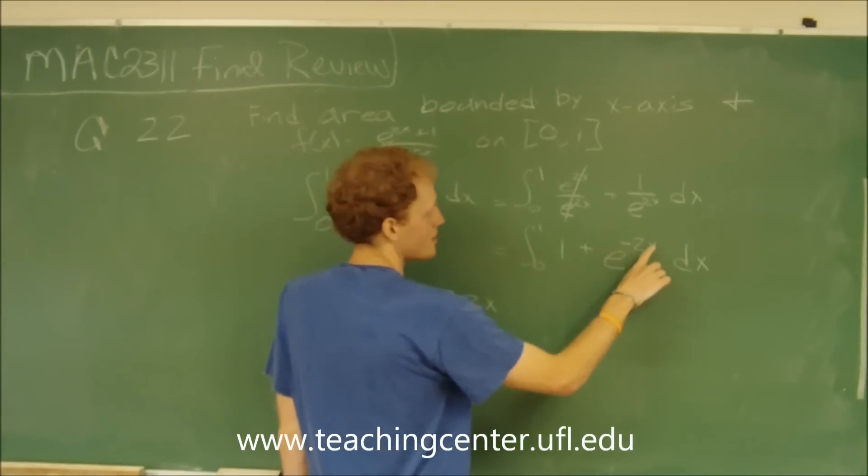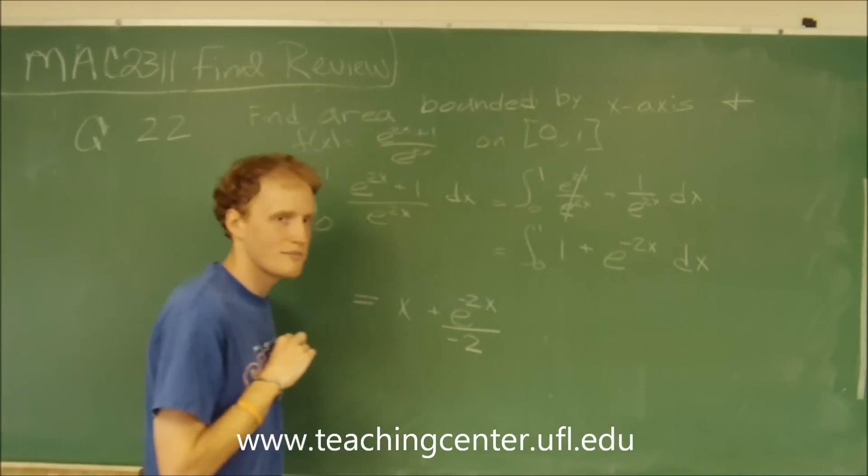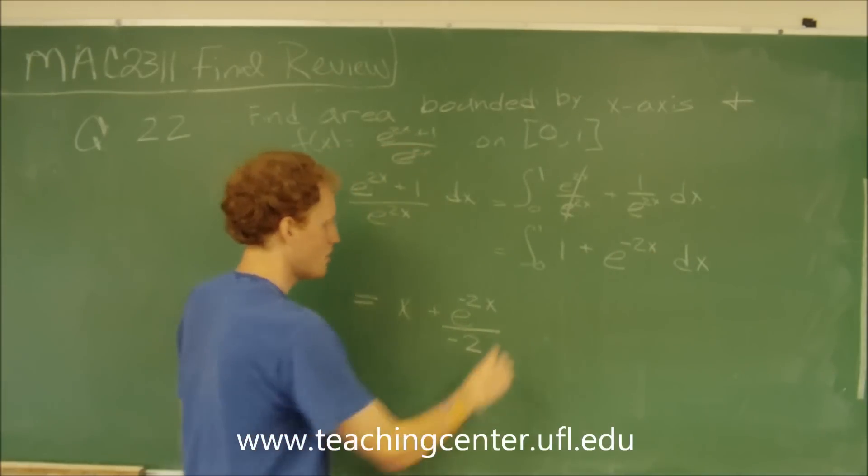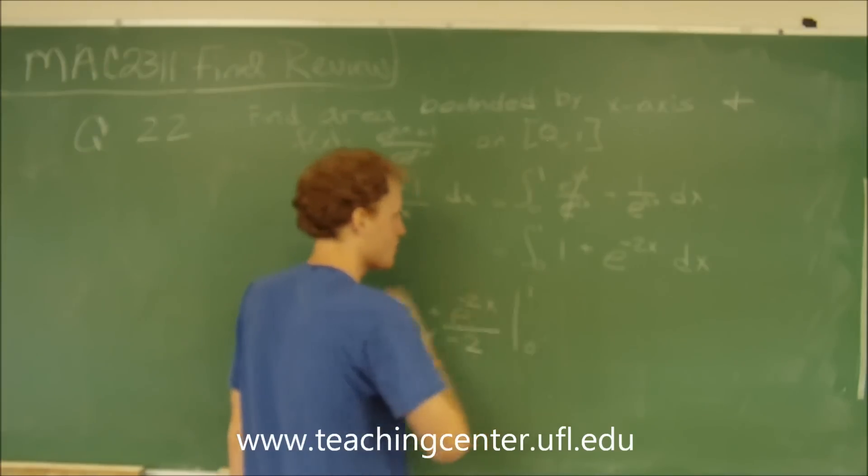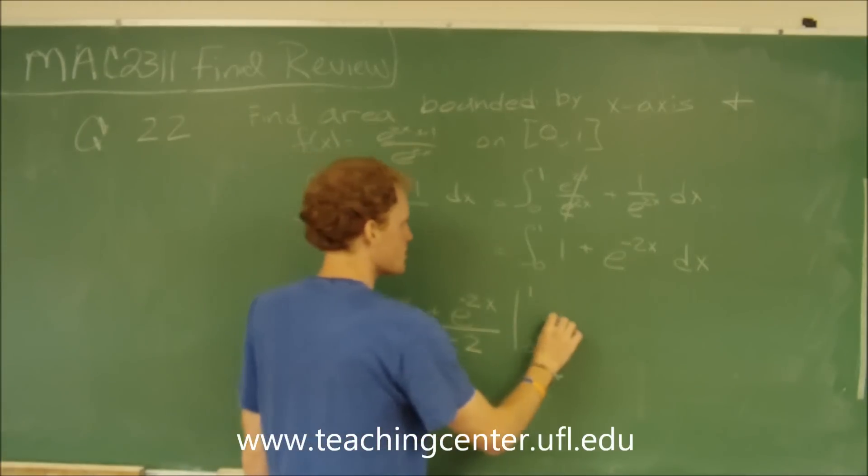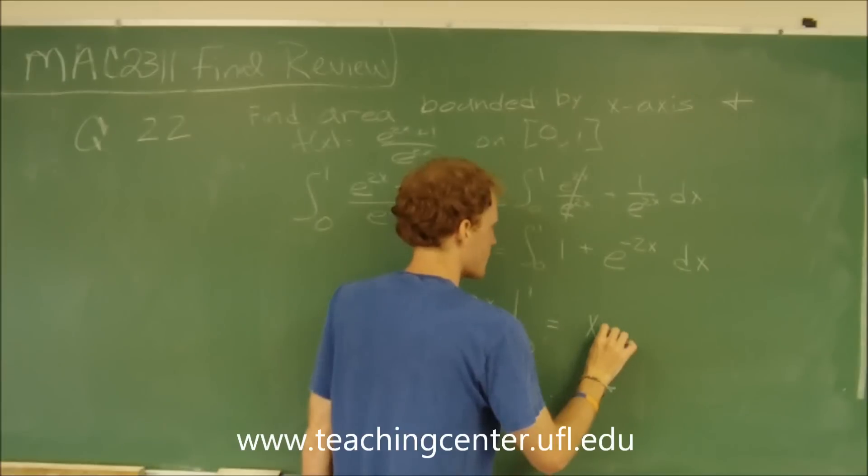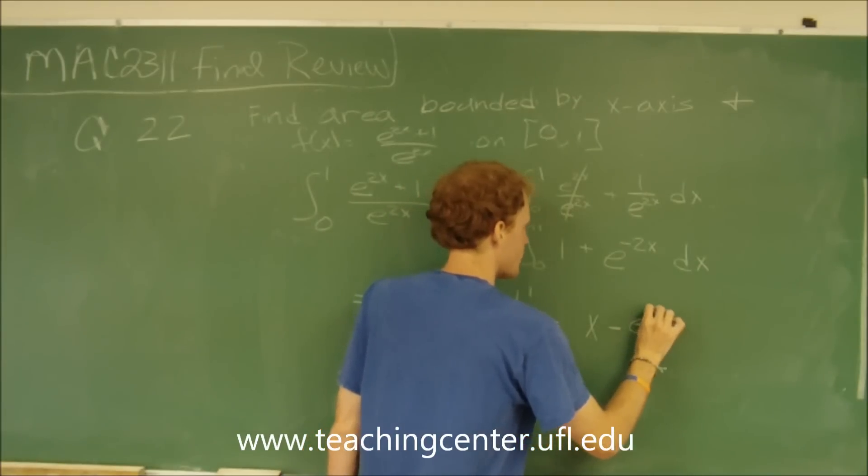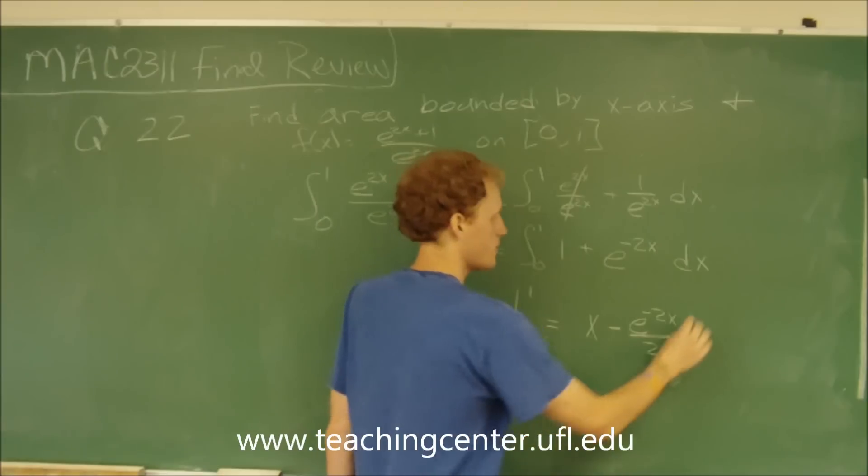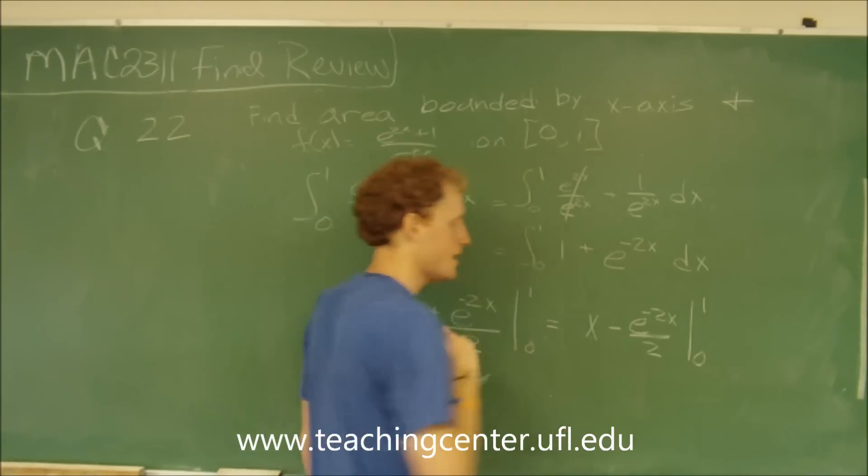We have to divide by negative 2. That will be from 0 to 1. It simplifies to x minus e to the negative 2x over 2.